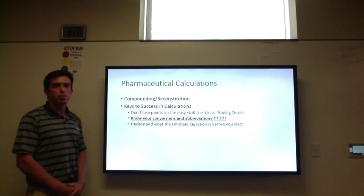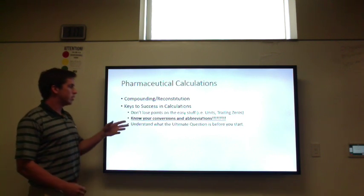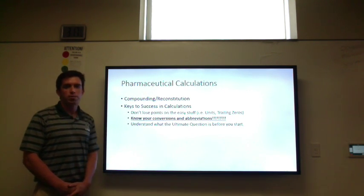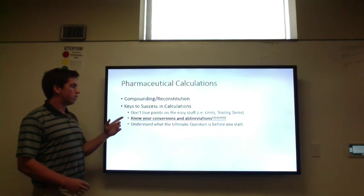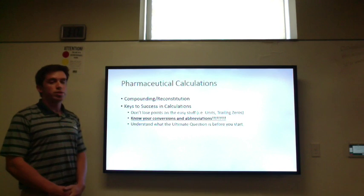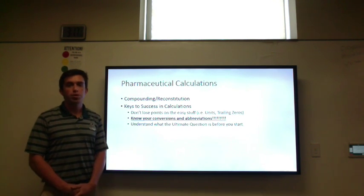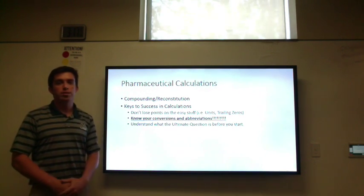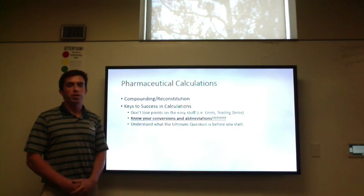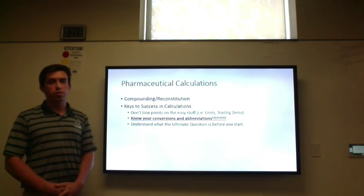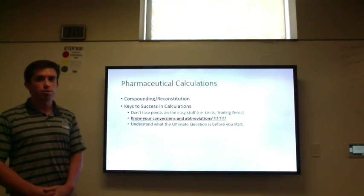I listed three keys to success when thinking about taking pharmaceutical calculations. First, definitely don't lose points on the easy stuff, such as units and trailing zeros. Often you can do a problem completely right step by step, and at the end you forget to put your units or you have trailing zeros — it's going to be marked completely wrong and you're going to lose all those points.